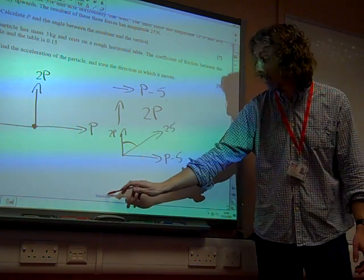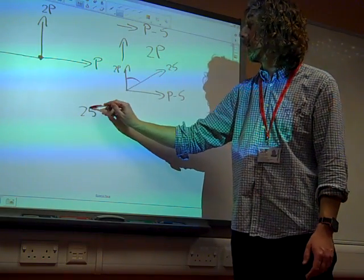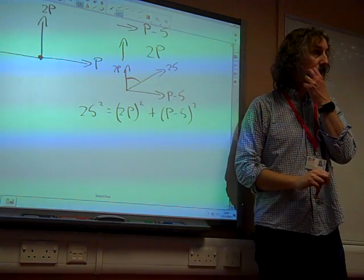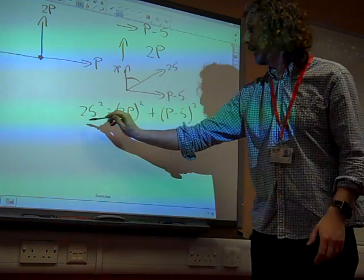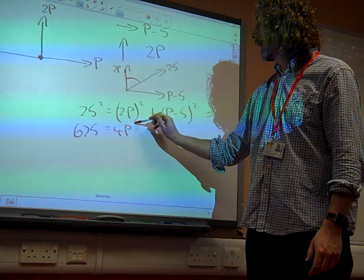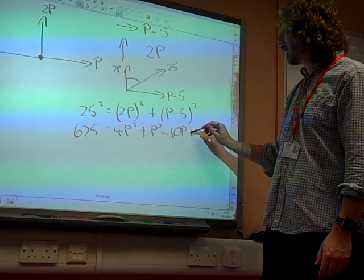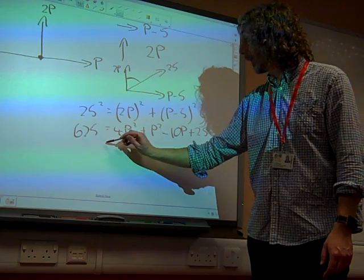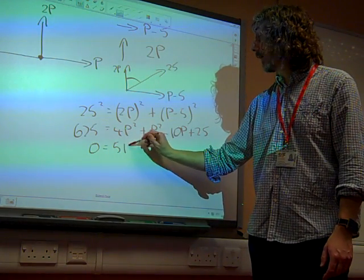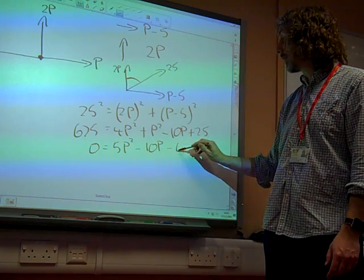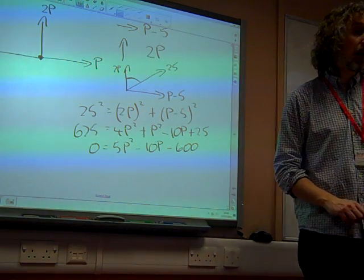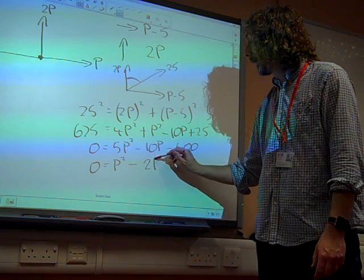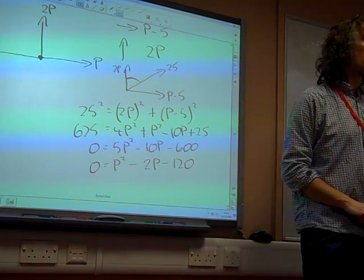So this is Pythagoras theorem. This says that 25 squared is 2P squared plus P minus 5 squared. So 625 is 4P squared plus P squared minus 10P plus 25. Giving us 0 equals 5P squared minus 10P minus 600. Which, if we divide everything by 5, gives us P squared minus 2P minus 120 as our quadratic equation.